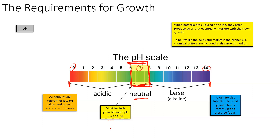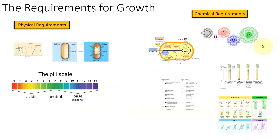When bacteria are cultured in the lab, they often produce acids that eventually interfere with their own growth. As a colony grows, they produce compounds that make the environment more acidic, the pH drops, and they can eventually produce pHs they can't tolerate — essentially inhibiting their own growth. To neutralize the acids and maintain proper pH, chemical buffers are included in the growth medium; when you make agar or broth, buffers are in place which are designed to withstand pH changes.